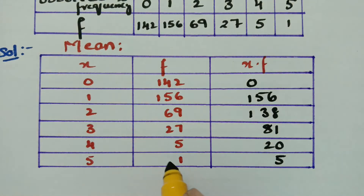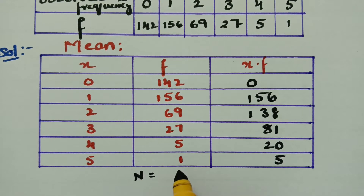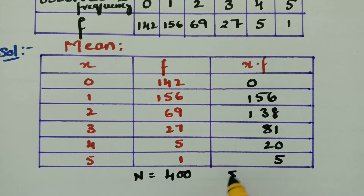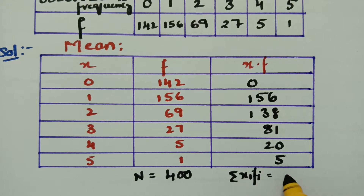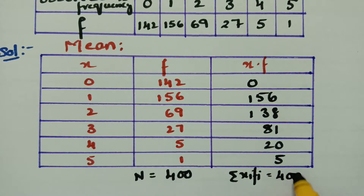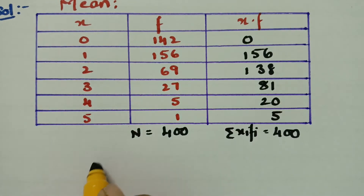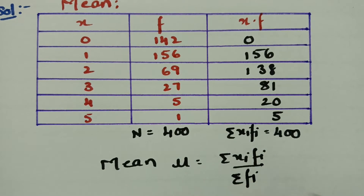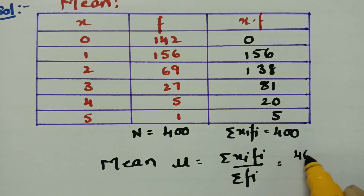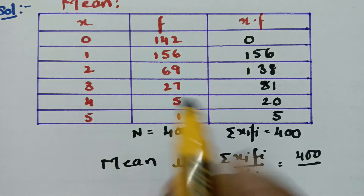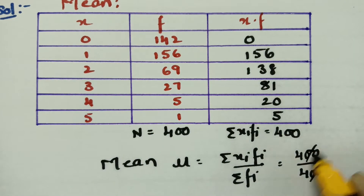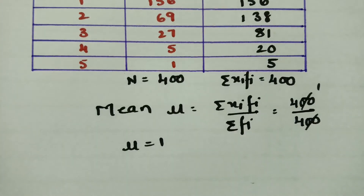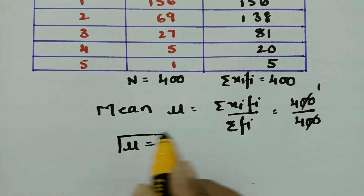Now we sum up all these values. N, the total frequency, is 400. And if I add all the x×f values, that is sigma xi times fi, the value is also 400. So the mean mu equals sigma fi·xi divided by sigma fi, which is 400 divided by 400, giving mu equal to 1.